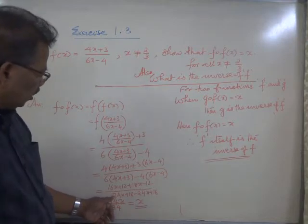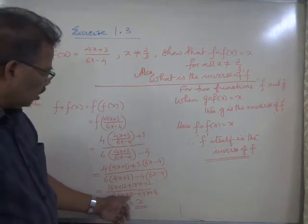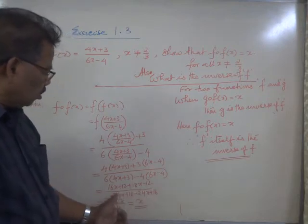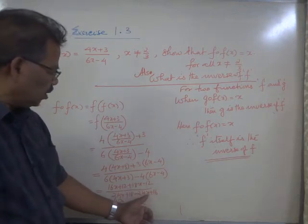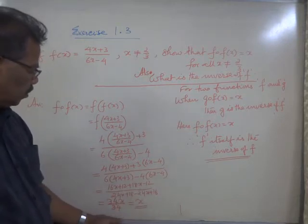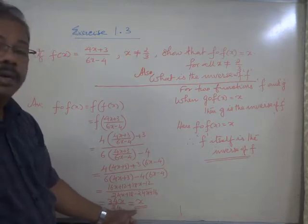In the denominator, we have 6 into (4x + 3) minus 4 into (6x - 4). That's 24x + 18 - 24x + 16, and the 24x cancels. 18 plus 16 equals 34. So 34x by 34 equals x.